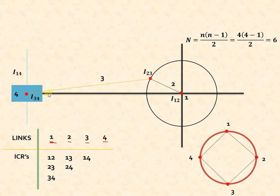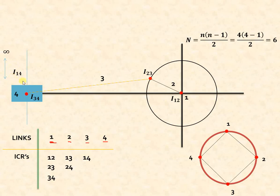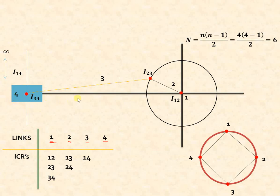The most important ICR is 1-4: the slider (link four) is sliding horizontally with respect to the fixed link (link one). Sliding motion can be described as rotation with infinite radius, so ICR 1-4 is perpendicular to the path of sliding, indicated by the blue line going towards infinity. This ICR can be shifted to pass through any other ICR by drawing a line parallel to this one through that ICR.